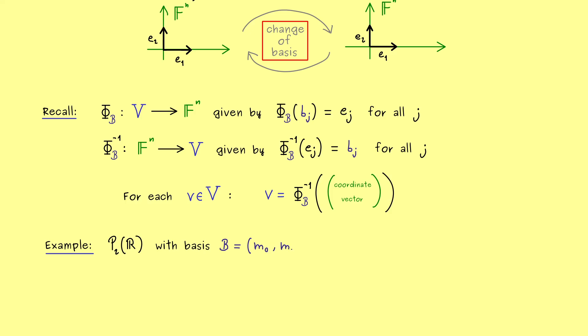And there we already know a basis namely the one that is given by the monomials. So let's call them m0, m1, m2. So these are functions from R to R given by m0(x) is equal to the constant 1.